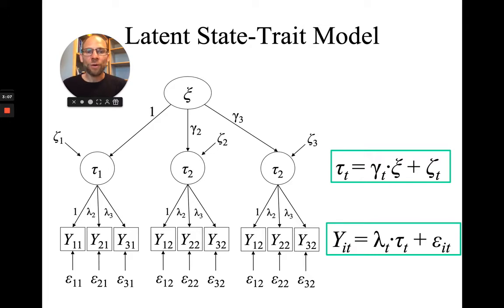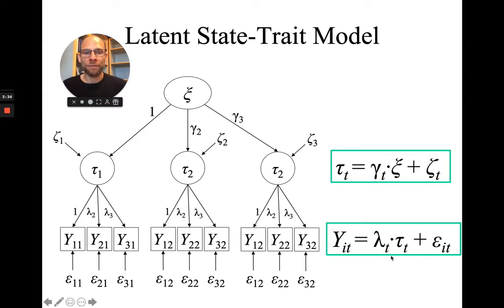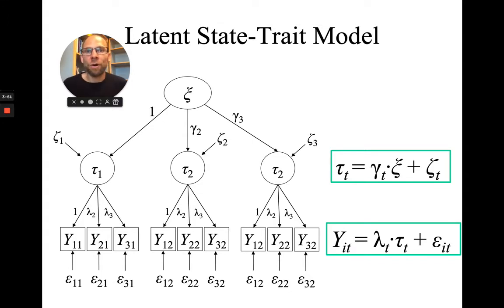We also have a first-order measurement equation — again with intercepts omitted for simplicity, since they don't add to the discussion of how the hierarchical factor model relates to the bifactor model. The manifest or observed variables y_it are a function of a factor loading lambda_t times tau_t plus epsilon_it. I'm assuming the first-order loadings are time-invariant here, though that's not required — the loadings could also be freely estimated.